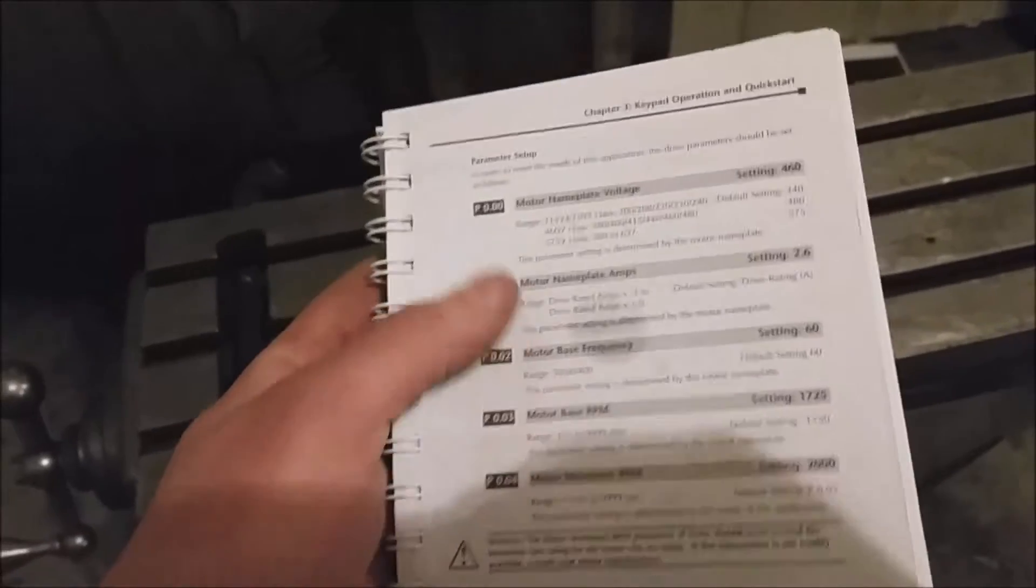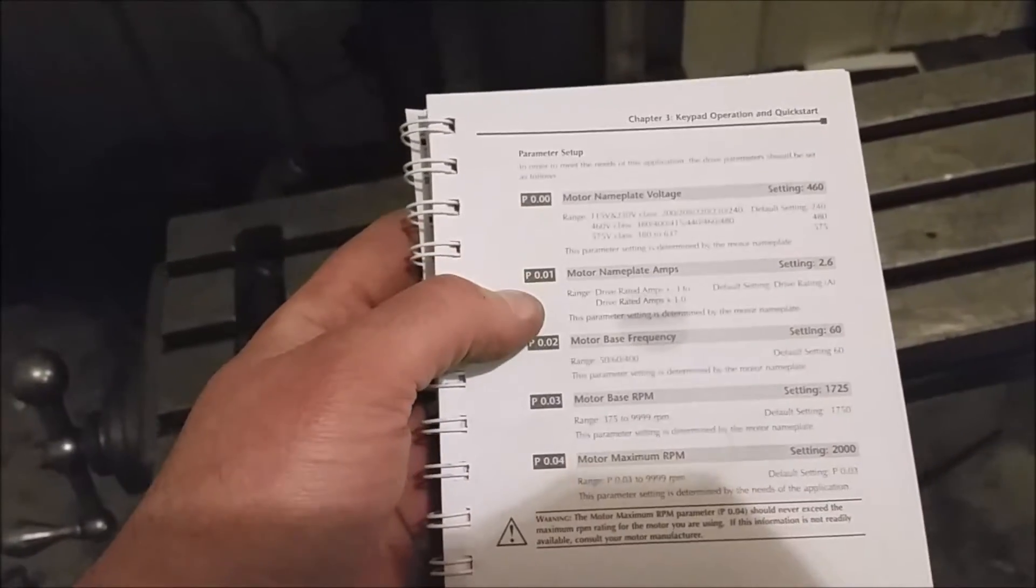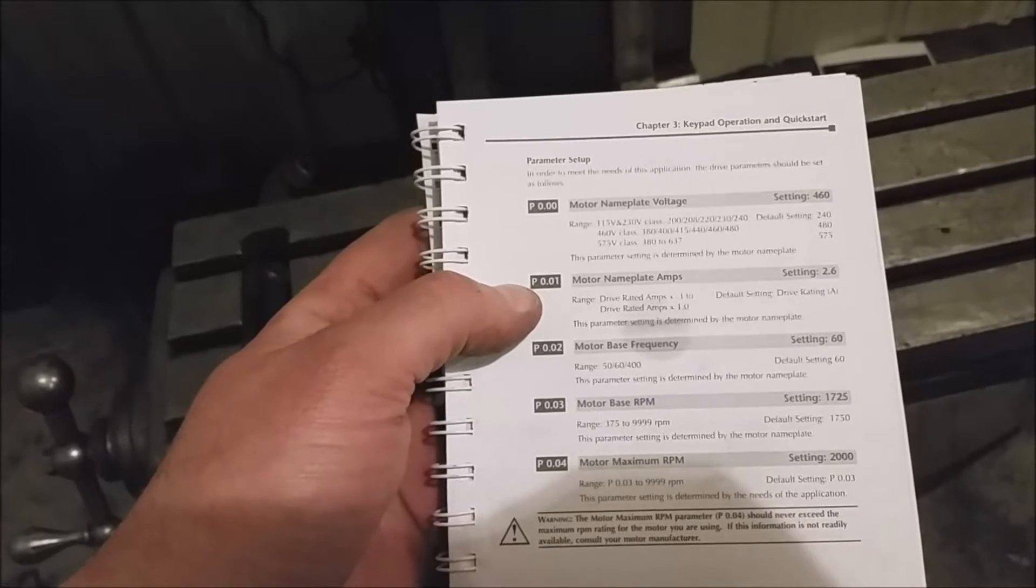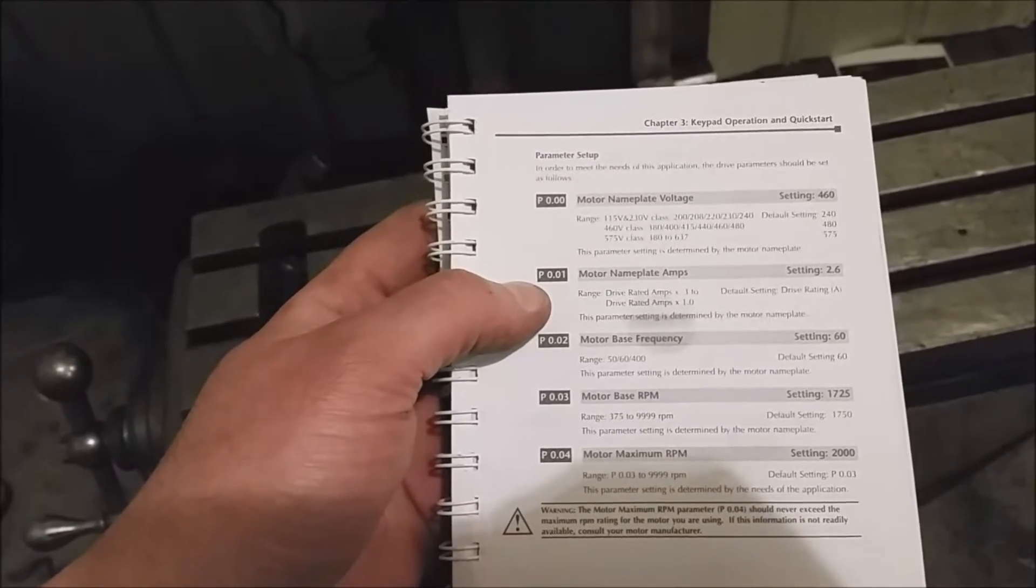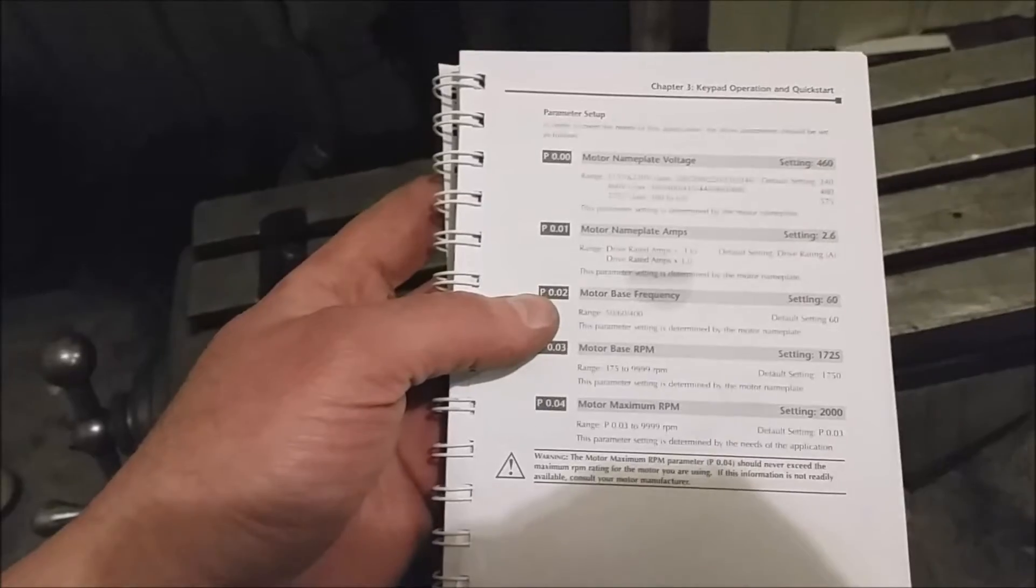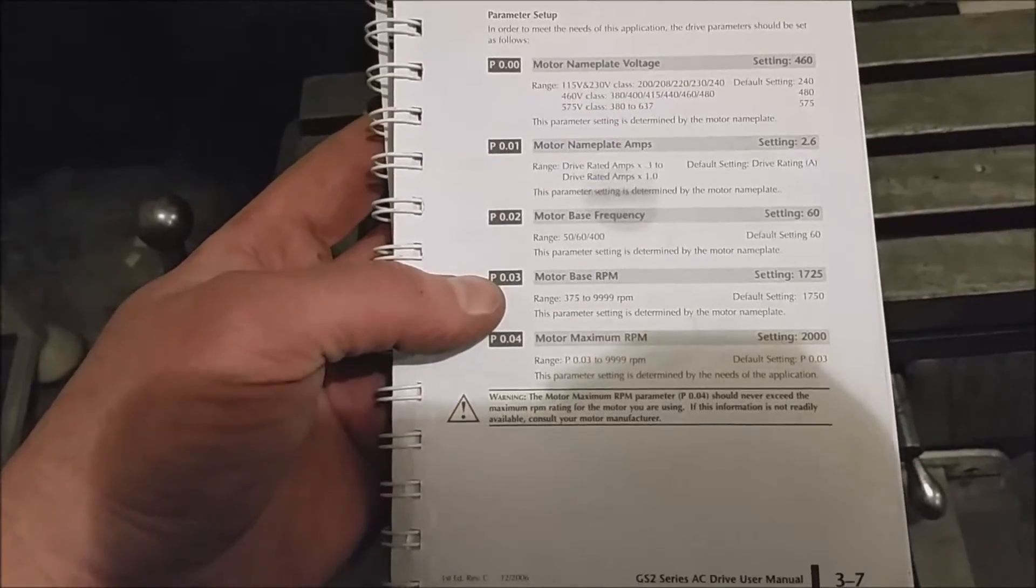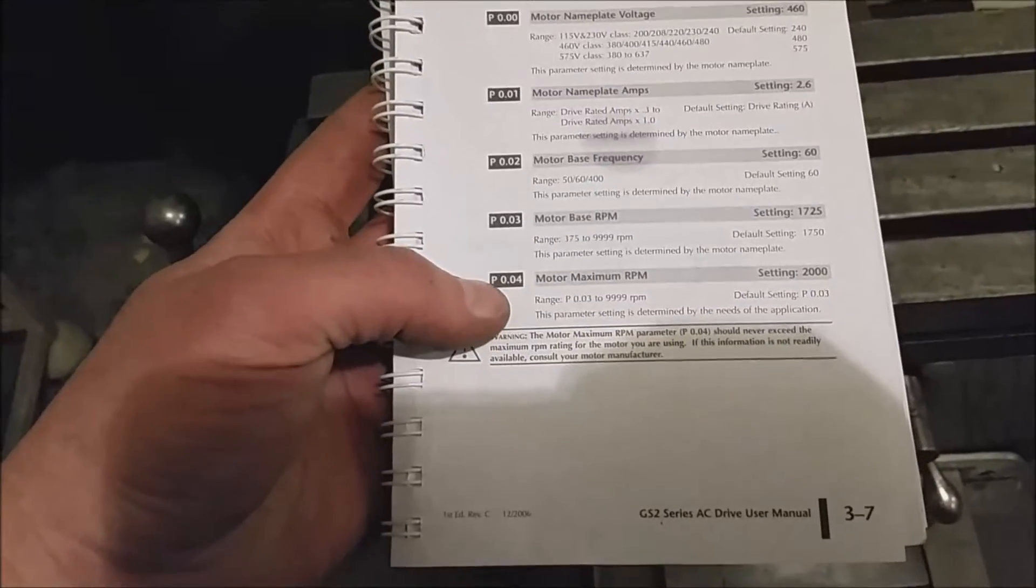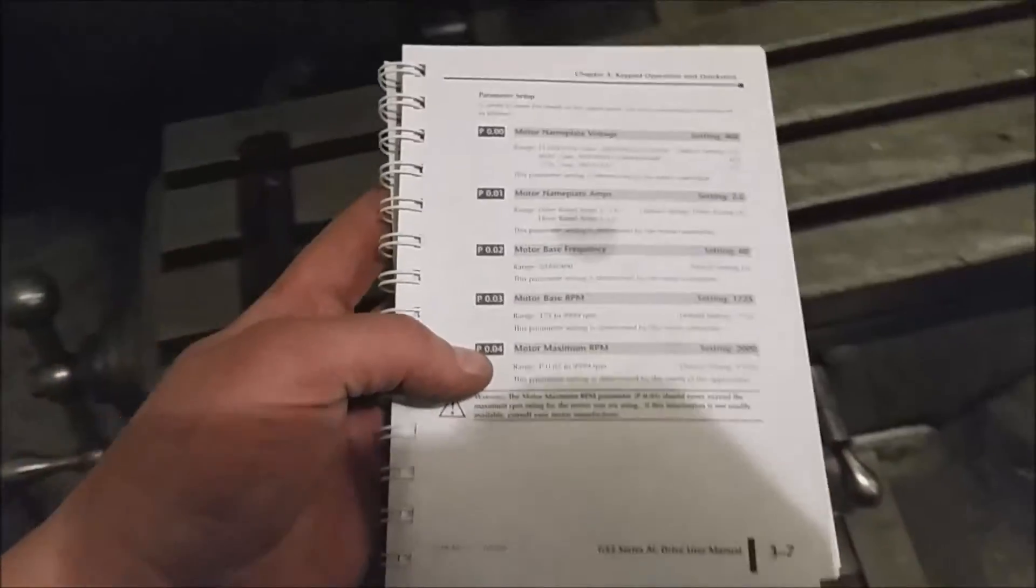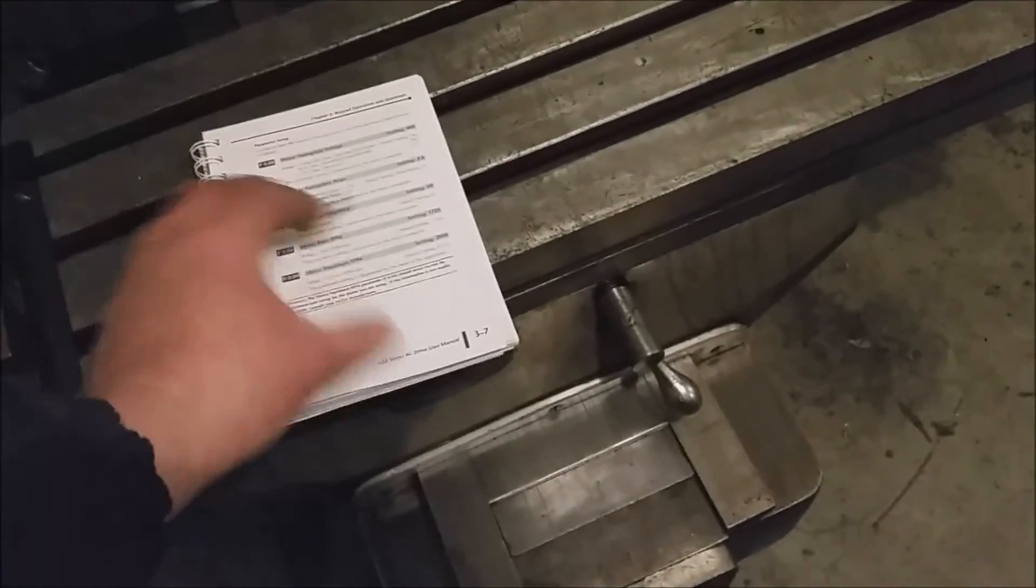What you've got to do to start with is really simple. The manual is really simple the way it shows you. You hit your program key and you basically just start walking down through each one of these things: your nameplate voltage, your motor nameplate amp, your base motor frequency, which in my case is 60 hertz, your motor base RPM, and your motor maximum RPM.